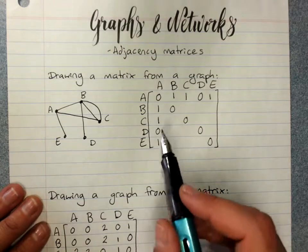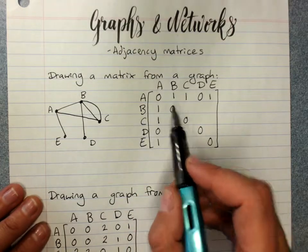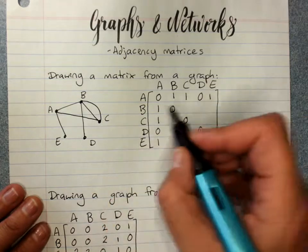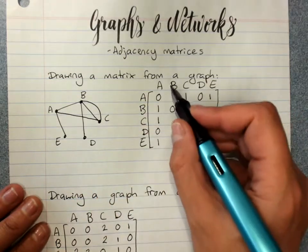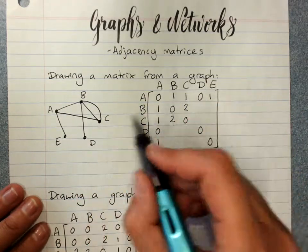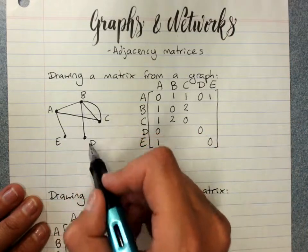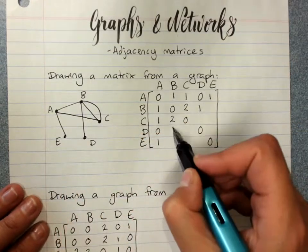It doesn't really matter. B to C has two multiple edges. So C to B has two. B to D, one.